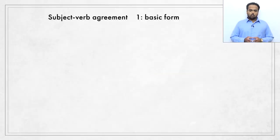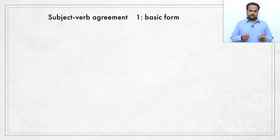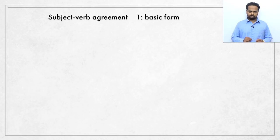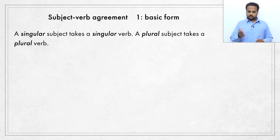So what is subject-verb agreement? Well, you know that every English sentence has a subject and a verb. Subject-verb agreement means the subject and the verb must be in the correct form. This is the rule: a singular subject takes a singular verb, a plural subject takes a plural verb.